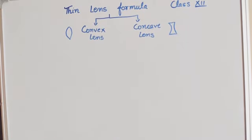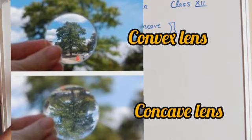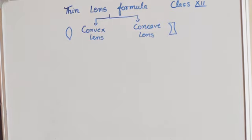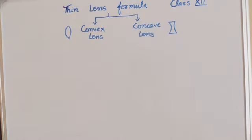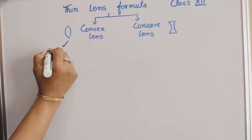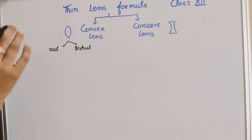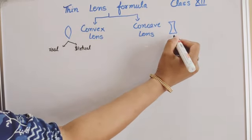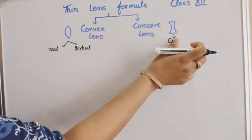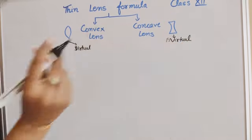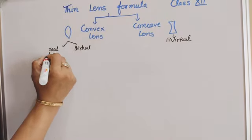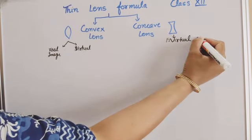In this video we will explain both lenses. In a Convex Lens there are two further cases — it can form a real image as well as a virtual image. A Concave Lens will only produce a virtual image; it will never form a real image.